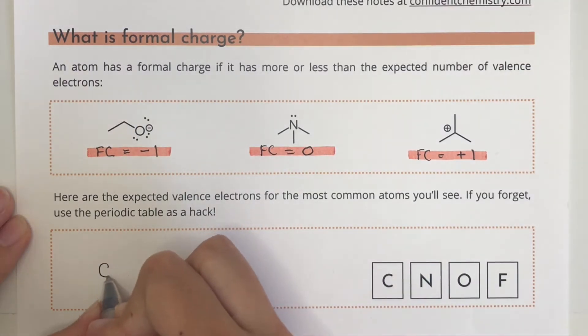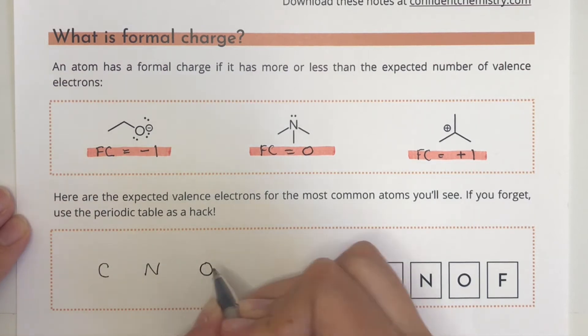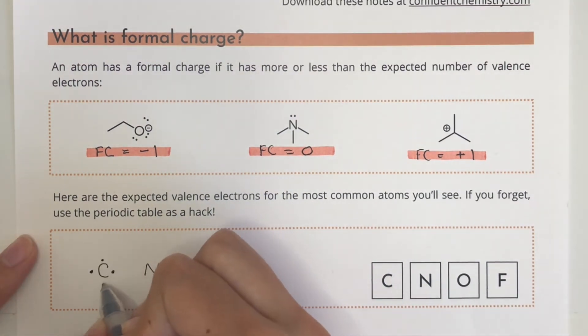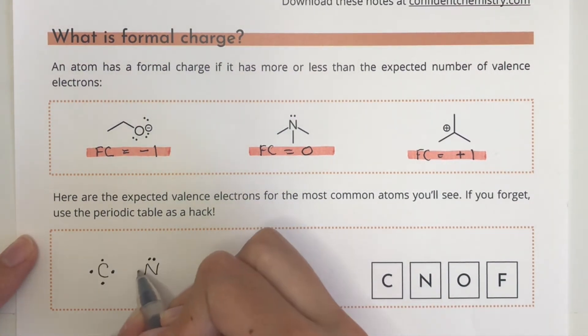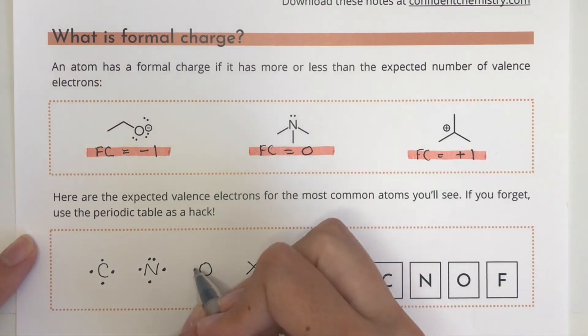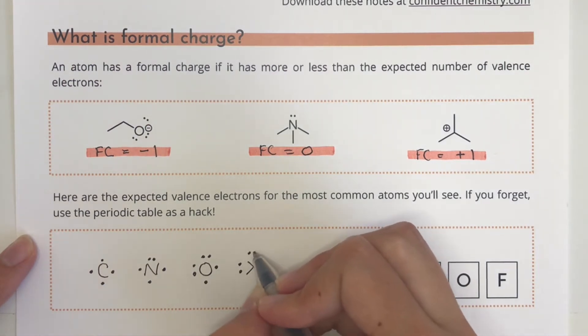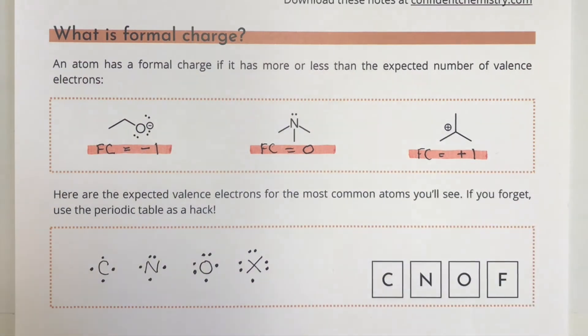Being able to calculate a formal charge quickly is an essential skill in organic chemistry. Before we get into exactly how to do it, let's refresh our memories about the expected number of valence electrons for some of the most common atoms we'll see. In your organic chemistry course you're probably going to see a lot of carbon, nitrogen, oxygen, and halogen atoms. Neutral carbon atoms have four valence electrons, nitrogen has five, oxygen has six, and halogens have seven.